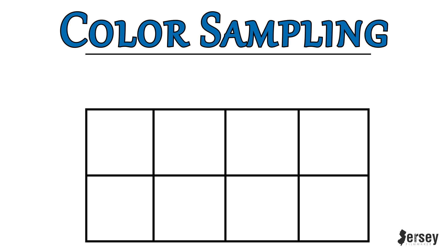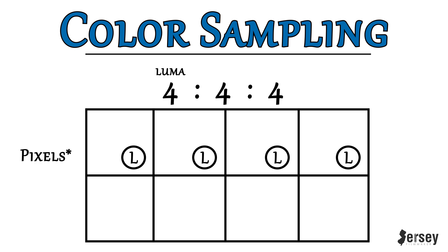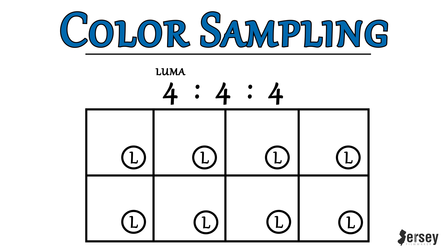Let's look at this diagram to help explain. This is usually depicted by 4 pixels across and 2 rows of sampling per pixel. Let's say we're looking at a 4:4:4 image. The first number, 4, is the luma channel. So it's going to take a sample of the luminance in all 4 channels in both rows, pretty much all the time, as you see in 4:4:4, 4:2:2, and 4:2:0.